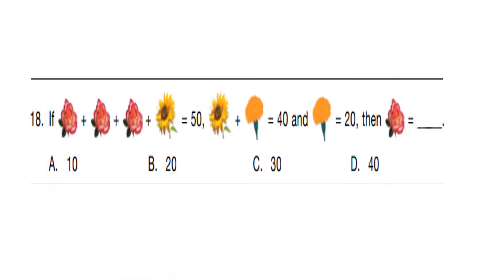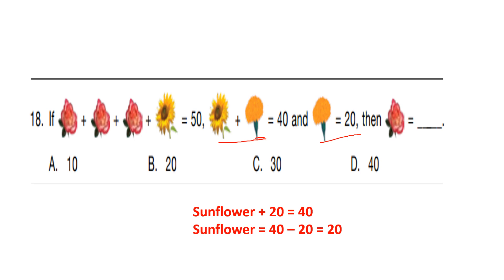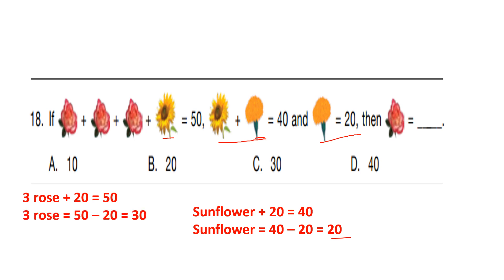Question number 18. If rose plus rose plus rose plus rose plus sunflower equals 50, sunflower plus marigold equals 40, and marigold equals 20, then rose equals what? Since marigold equals 20, sunflower equals 40 minus 20 equals 20. Then 3 roses plus 20 equals 50, so 3 roses equals 30, and 1 rose equals 10. Our answer is option A, 10.